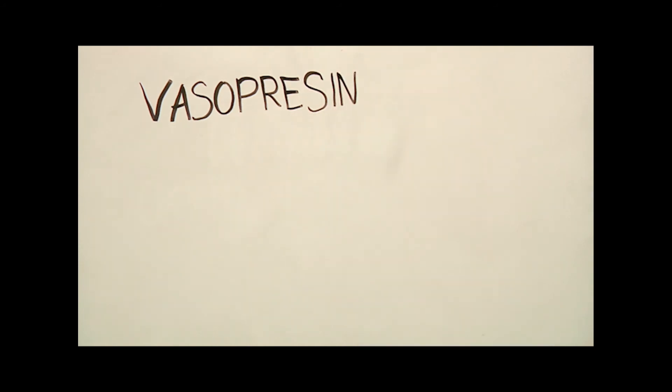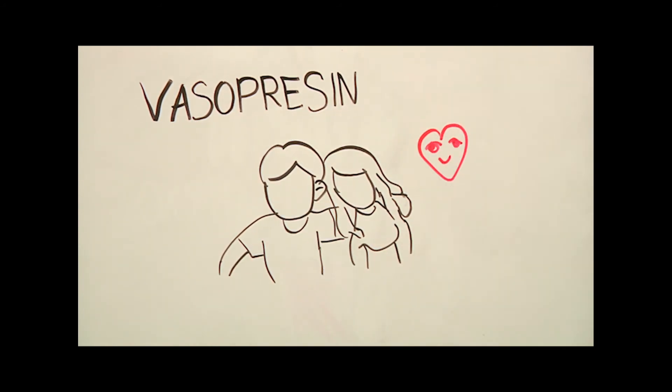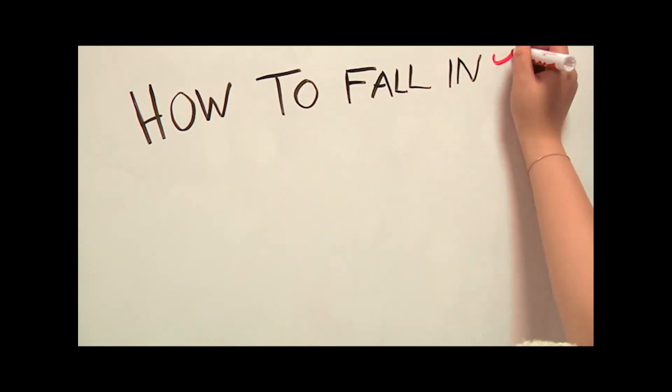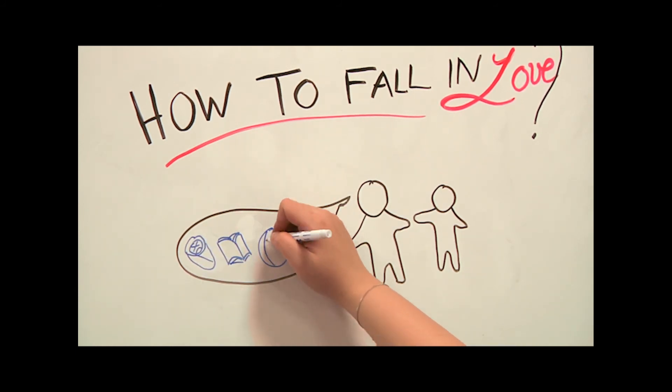Vasopressin is another important hormone in the long-term commitment stage and is released after sex. And finally, how to fall in love. Find a complete stranger. Reveal to each other intimate details about your lives for half an hour.